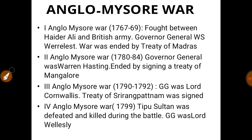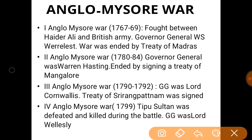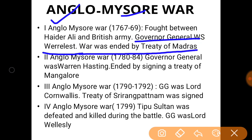After the conquest of Bengal, the next target was Mysore, where three to four wars were fought with its rulers. Haidar Ali was the first ruler, succeeded later by Tipu Sultan. Wherever you see 'Anglo,' that means one side is British. The first Anglo-Mysore War was fought between 1767 and 1769, with the war ending by the Treaty of Madras. It was fought between the army of Haidar Ali, the father of Tipu Sultan, and the British.